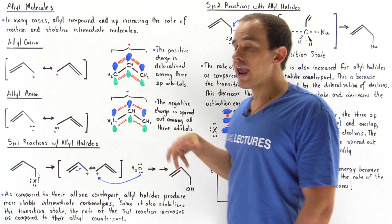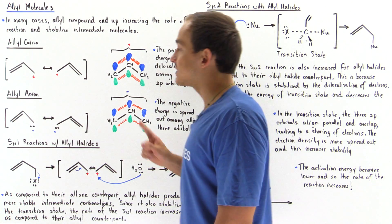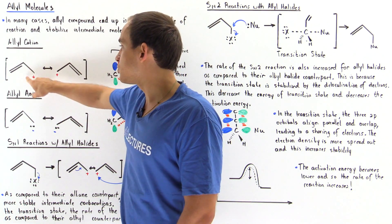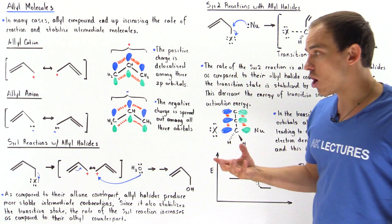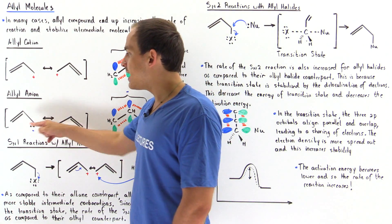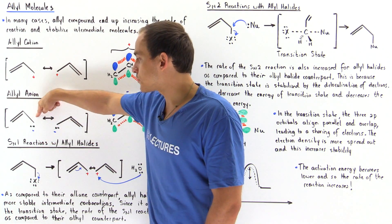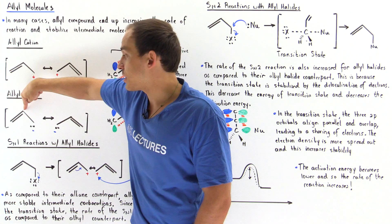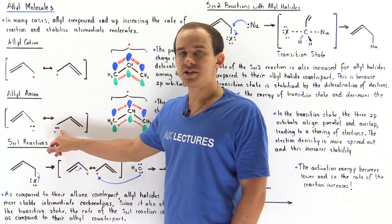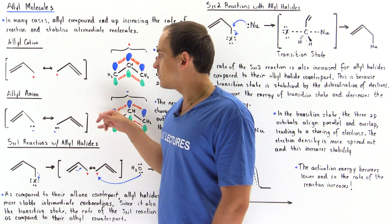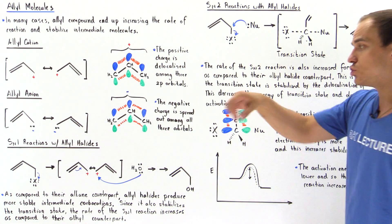Now let's move on to a similar compound known as the allyl anion. This is almost the same thing except on this 2p orbital we do not have a positive charge — we have two electrons, giving a negative charge. In a very similar way, two resonant structures are formed. The lone pair of electrons on the first carbon bonds with the adjacent carbon forming a double bond, displacing electrons onto the third carbon. In the same way that the positive charge jumped back and forth, the negative charge and the two electrons also jump back and forth.